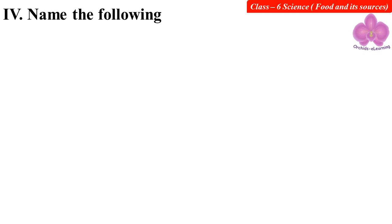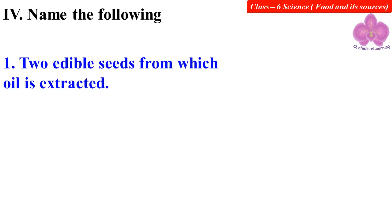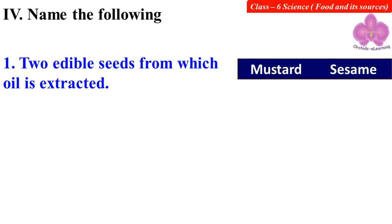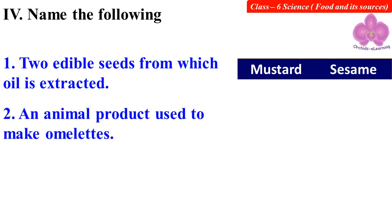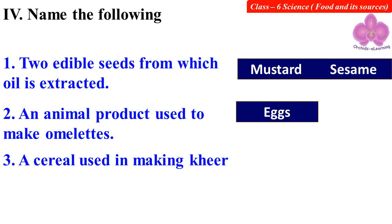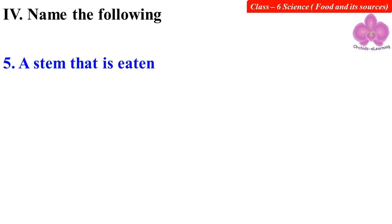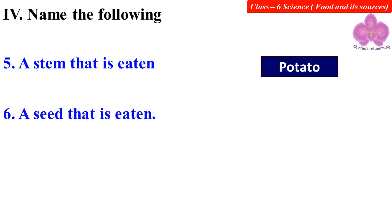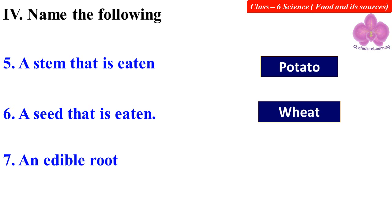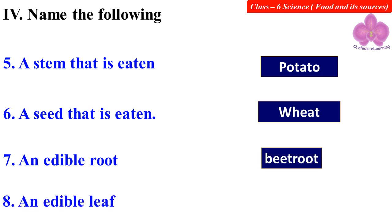Question 4: Name the following. First: Two edible seeds from which oil is extracted — Mustard and sesame. An animal product used to make omelettes — Eggs. A cereal used in making kheer — Rice. A spice obtained from the bark of a tree — Cinnamon. A stem that is eaten — Potato. A seed that is eaten — Wheat. An edible root — Beetroot. An edible leaf — Spinach.